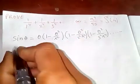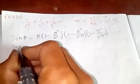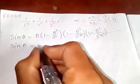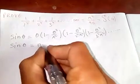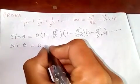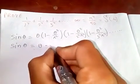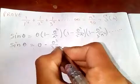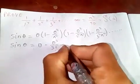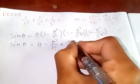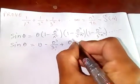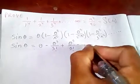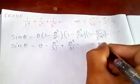And we also already know that sin(θ) is again equal to θ minus θ cubed over 3 factorial, plus θ to the 5 over 5 factorial, minus and so on.